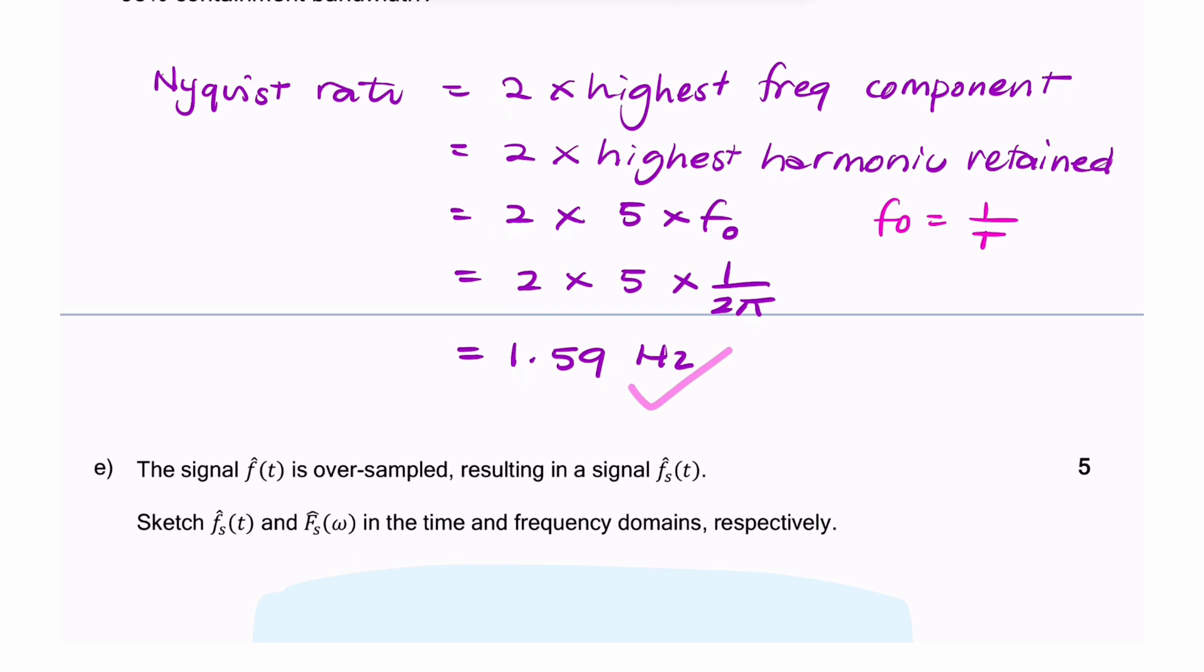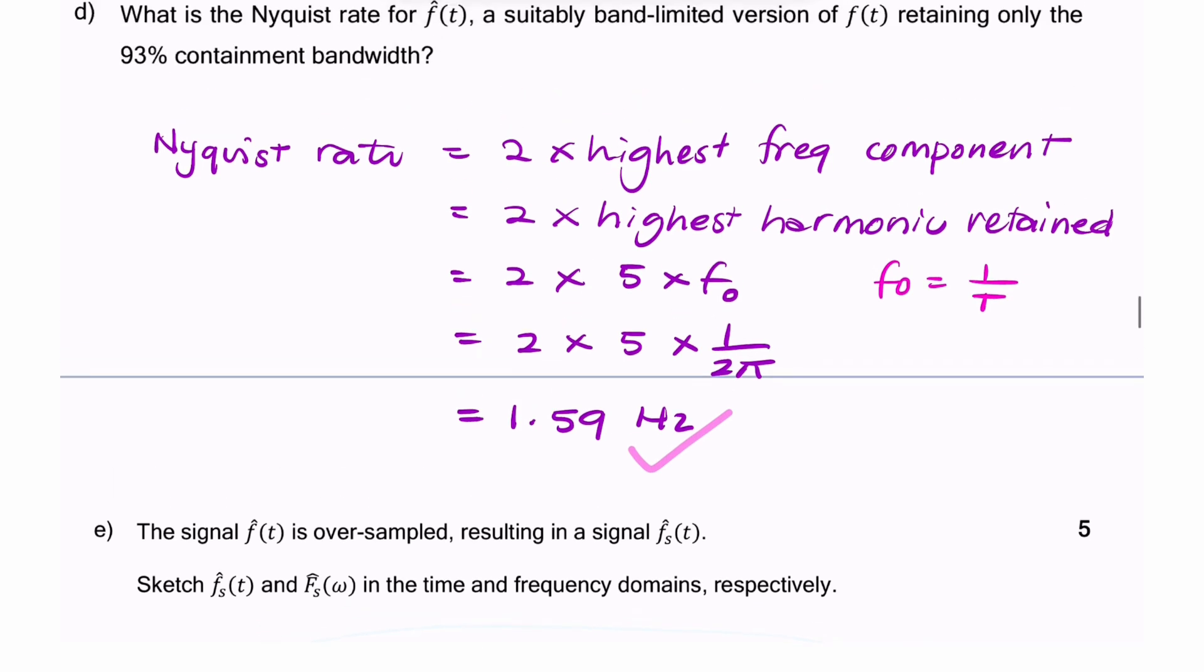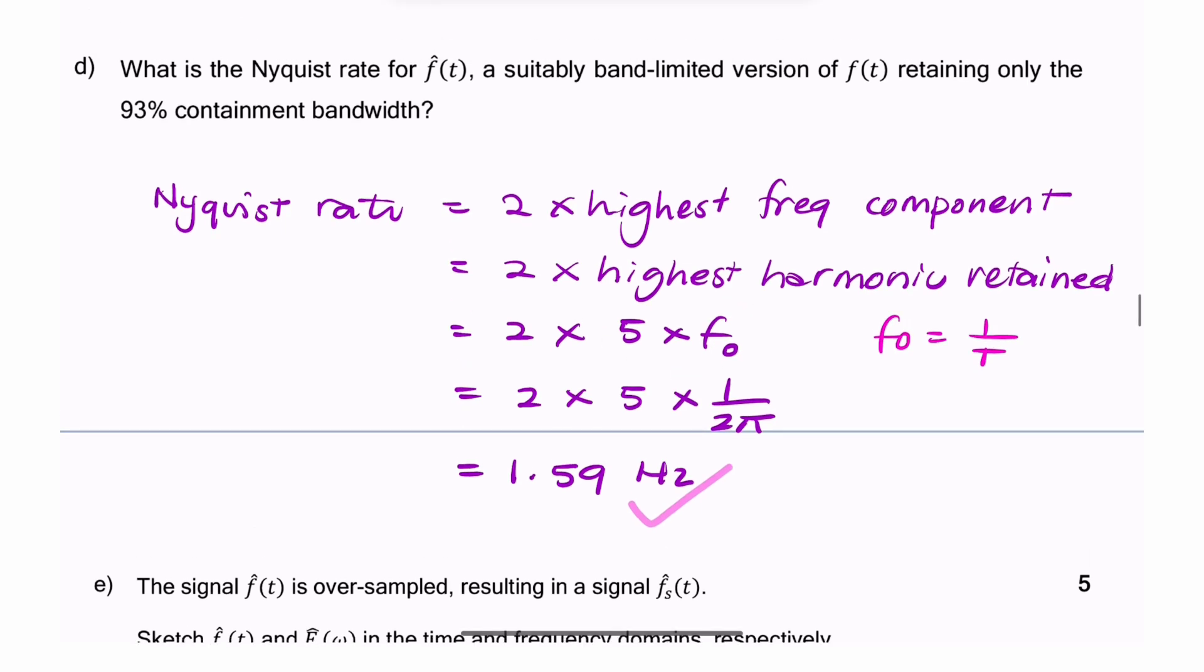You can't sample at that rate. You would sample at a rate higher than the Nyquist rate. The 93% containment bandwidth is 5 times F₀. What we want is the Nyquist rate, which is twice that.